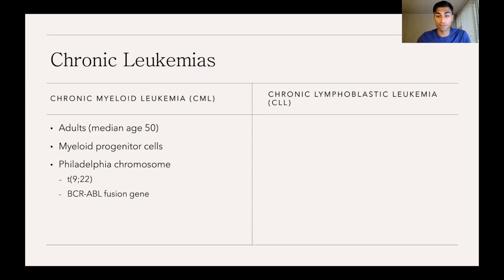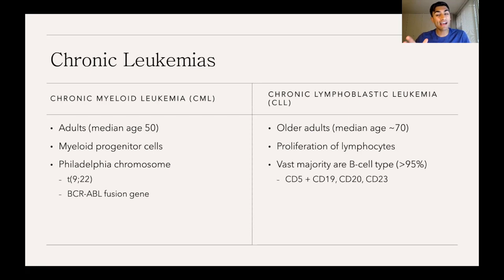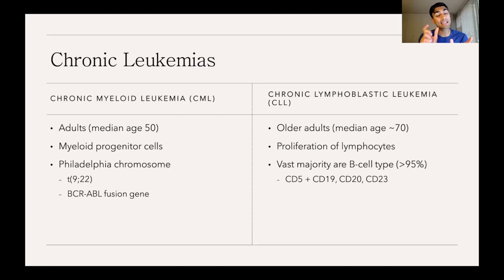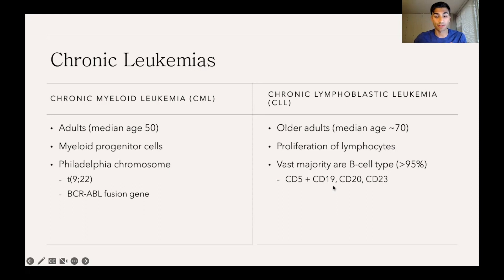On the lymphoid side, CLL mainly occurs in older adults, with a median age of diagnosis around 70, and is characterized by proliferation of lymphocytes. The vast majority — more than 95% — of CLL cases are B cell type. Uniquely, these cells have both B and T cell markers: CD5, typically a T cell marker, is expressed alongside traditional B cell markers like CD19, CD20, and CD23. If you see that combination of markers, that could indicate CLL.